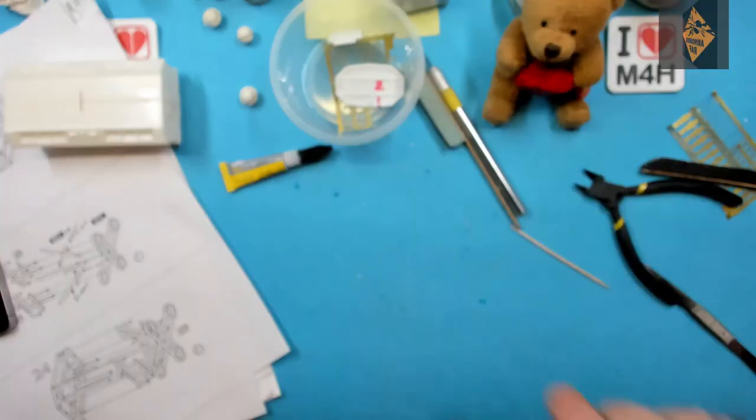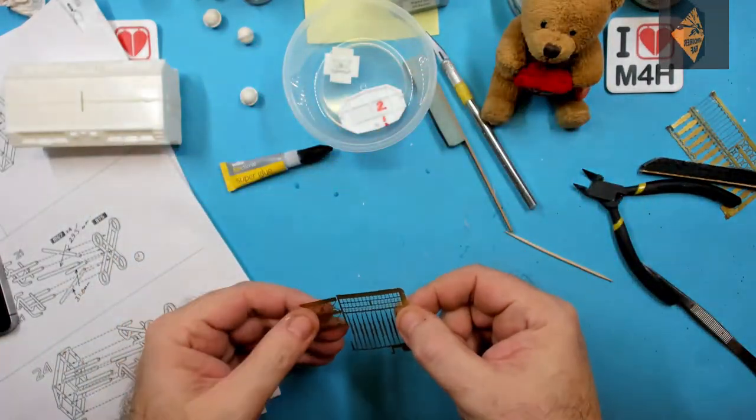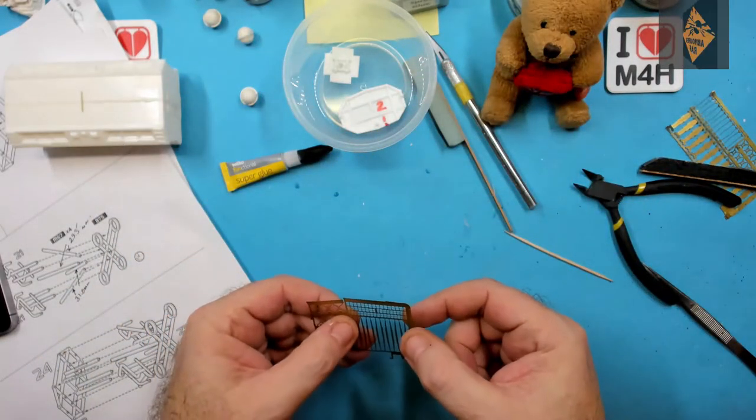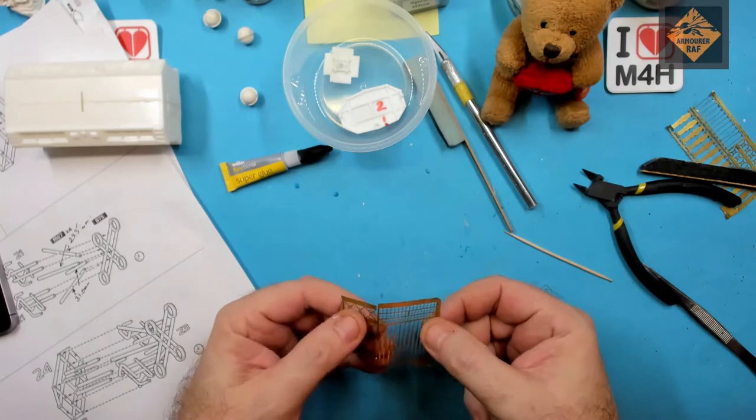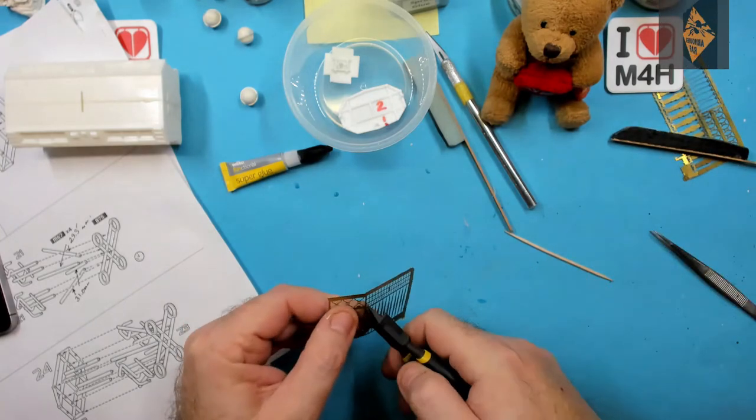So I've gone through my PE and found these little greeblies that I'm going to use on the landing gear. They're from the 1/32 scale Sterling. They're the sway feet on the bombs. So let's get these cut out, bent, and stuck on.